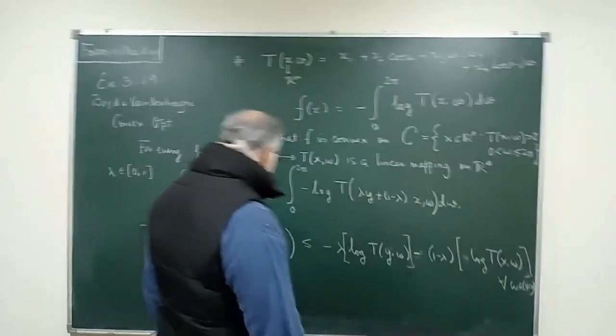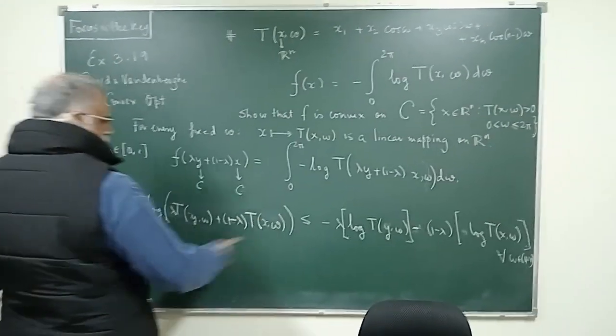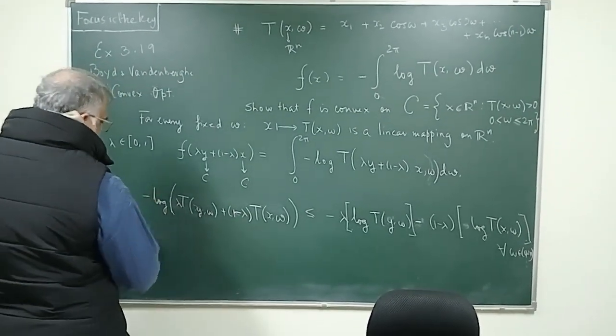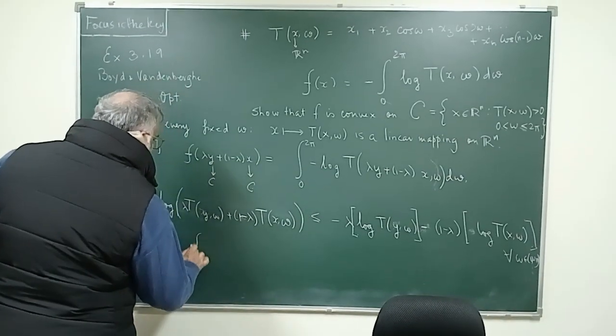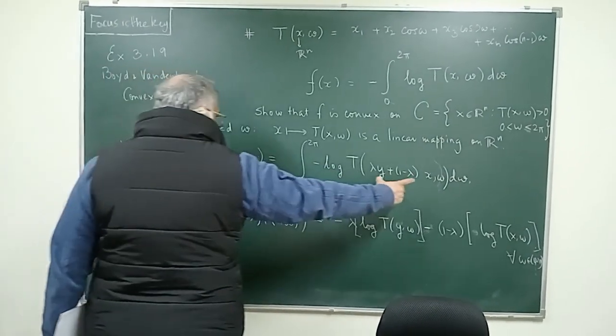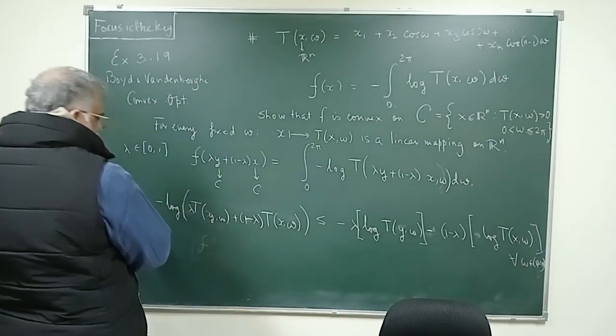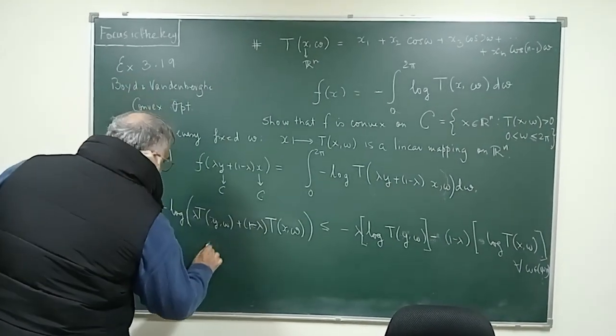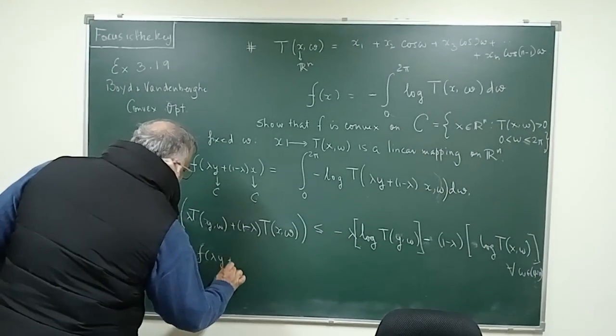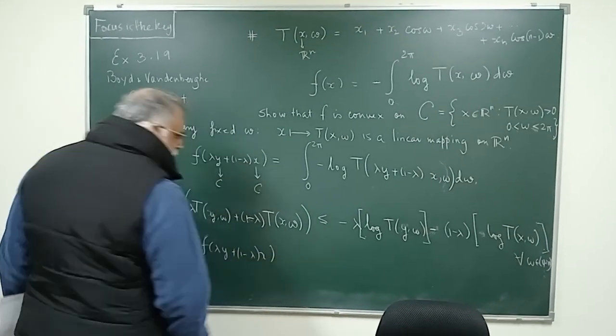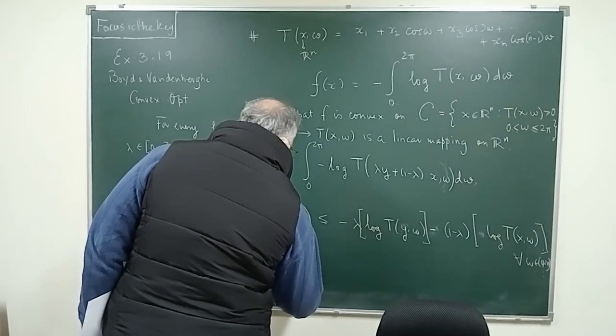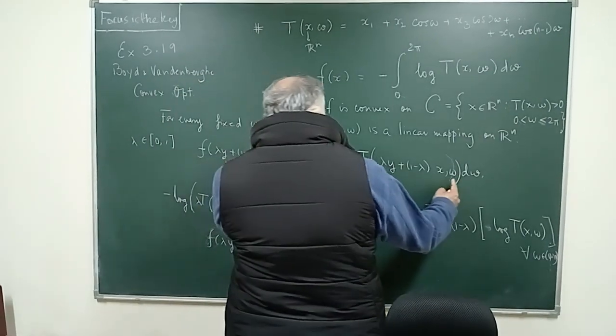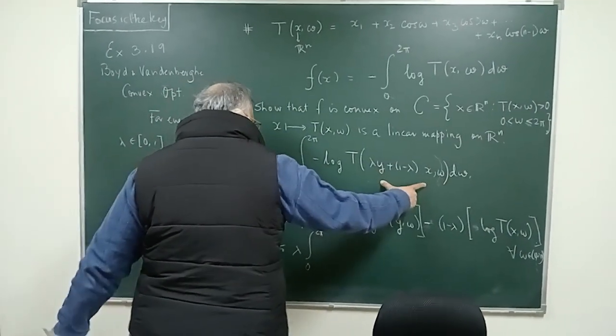Because it is true for every ω, I can integrate it out with respect to dω. If I integrate this with respect to dω, this will be nothing but this expression. What would happen is this f(λy + (1-λ)x) is less than or equal to λ times the integral from 0 to 2π.